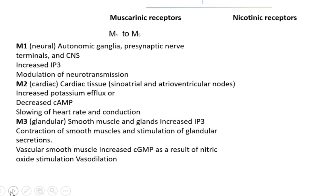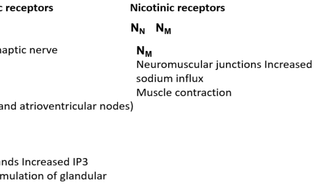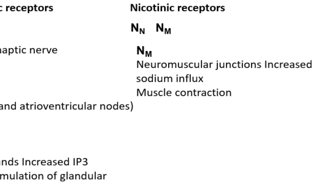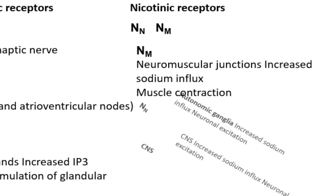Nicotinic receptors are found at all autonomic ganglia, at somatic neuromuscular junctions, and in the central nervous system. These receptors are ligand-gated sodium channels whose activation leads to sodium influx and membrane depolarization.